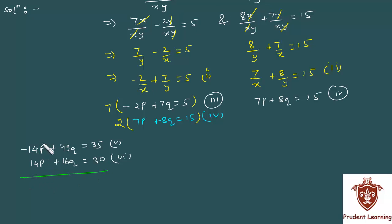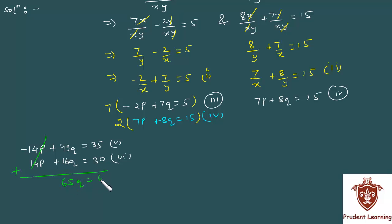Now, the coefficient of p is the same with opposite signs, so we simply add the equations. The p terms cancel. 49q plus 16q gives us 65q is equal to 35 plus 30, which is 65. This gives us q equal to 1.